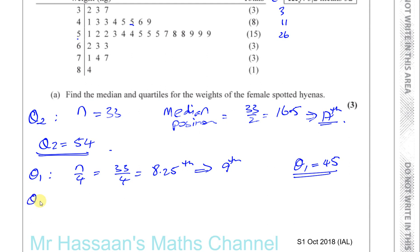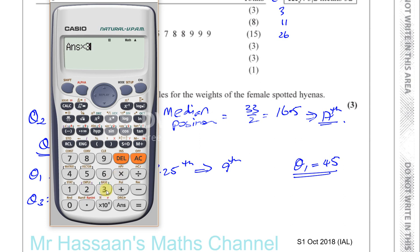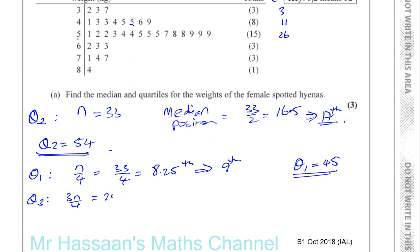And Q3, which is the upper quartile, is 3n over 4. So this 8.25 that we've got before, okay, we just multiply it by 3. That gives us 99 over 4, which is 24.75. So we're looking for the 25th term. So that will give us Q3. So the 26th term is this. This is the 25th term, so that's 59. So we have basically our answers. Q1 is 45. Q3 is 59. And Q2 is 54.